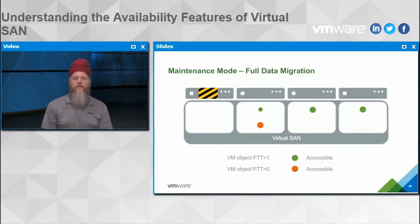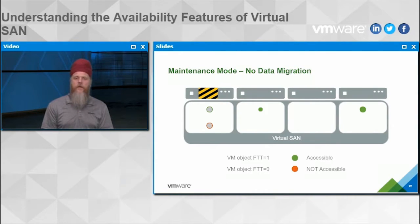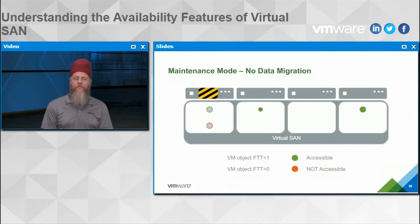The full data migration option copies all data from that host onto other hosts in the environment so no VM data lives on it anymore — useful when replacing a host, removing it permanently, or taking it down for an extended period. The no data migration option leaves components in place, which would make any failures-to-tolerate-zero VM unavailable since it has just a single component. You'd only use this if you're okay tolerating that downtime or if the cost of moving data is significant.